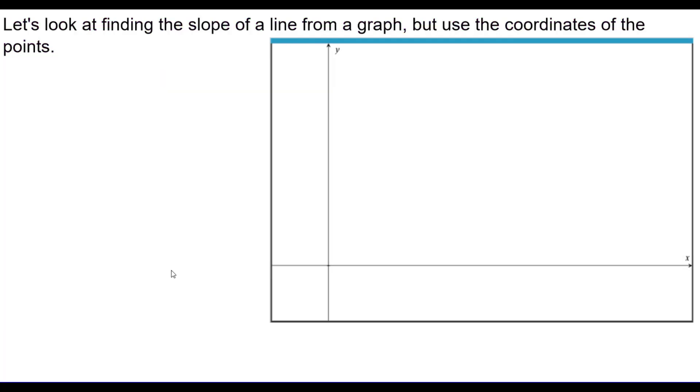Now, let's look at finding the slope of a line using the coordinates of a point in general. That is, the coordinates are going to be variables, not specific numbers.